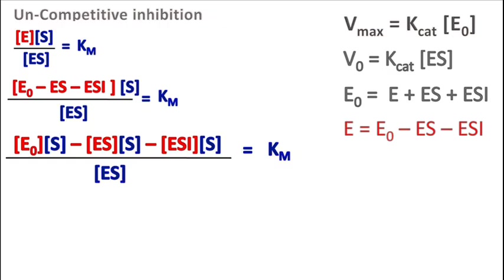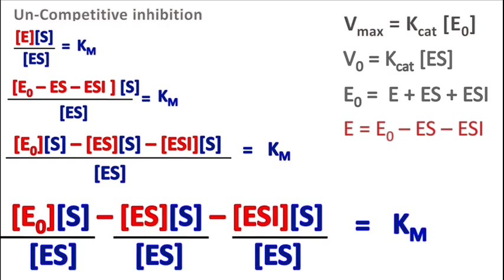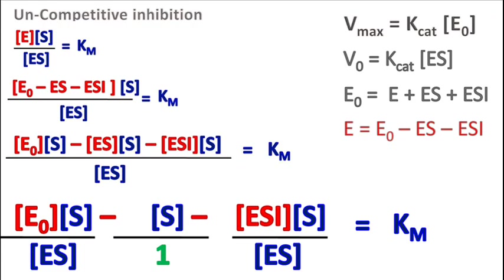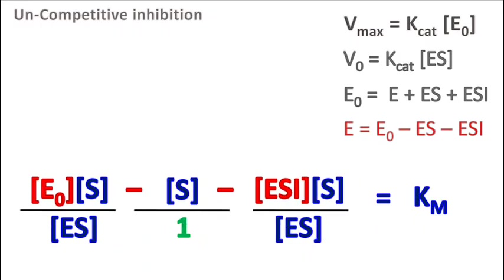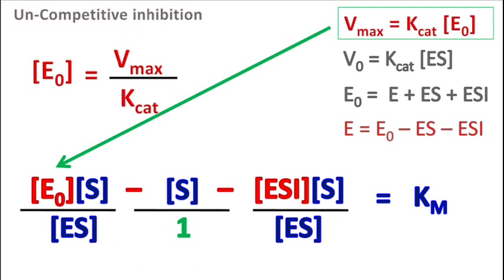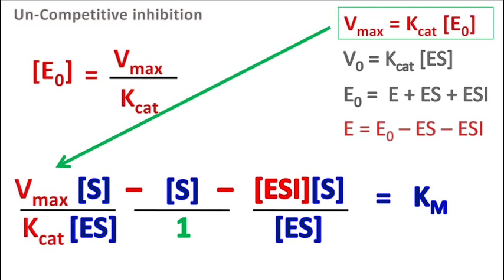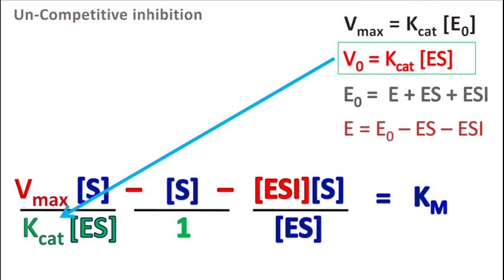Now the term E0 in the equation can be replaced as Vmax by Kcat, and the product of Kcat and ES is V0. So we get E0 into S minus ESI into S upon ES is equal to Km.